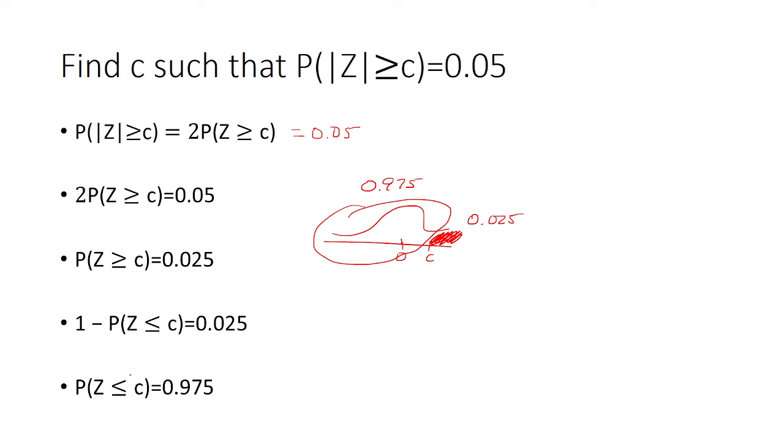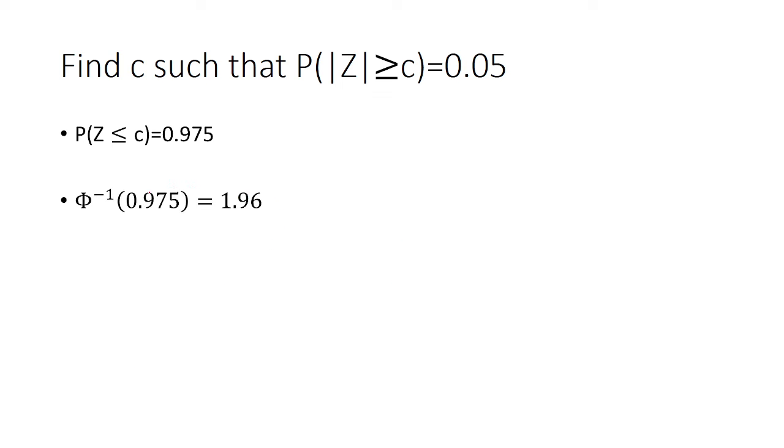To solve for c, we take the inverse norm of 0.975 and get c equals 1.96.